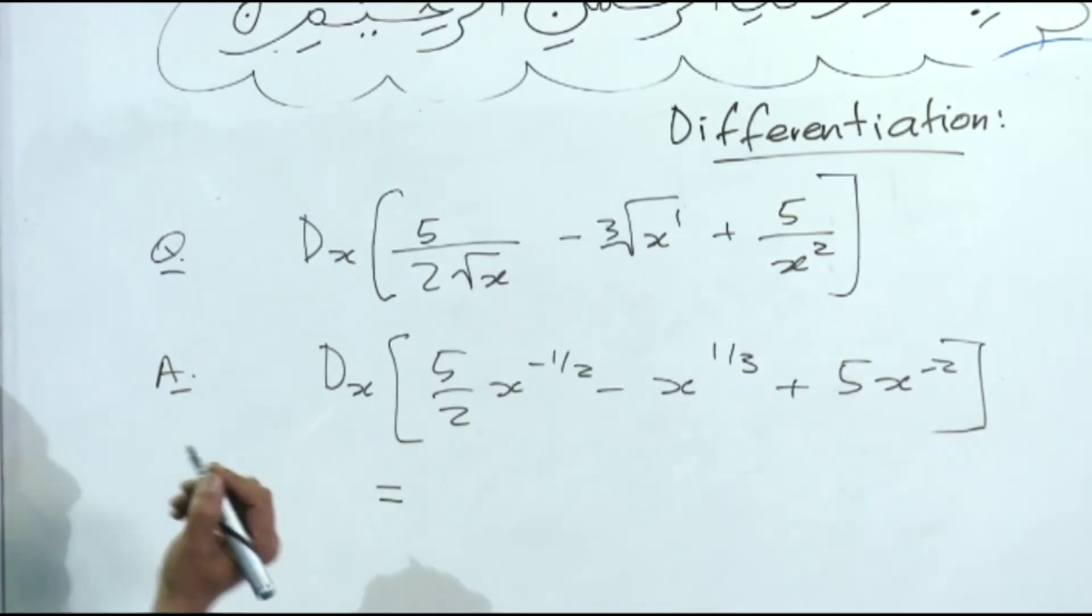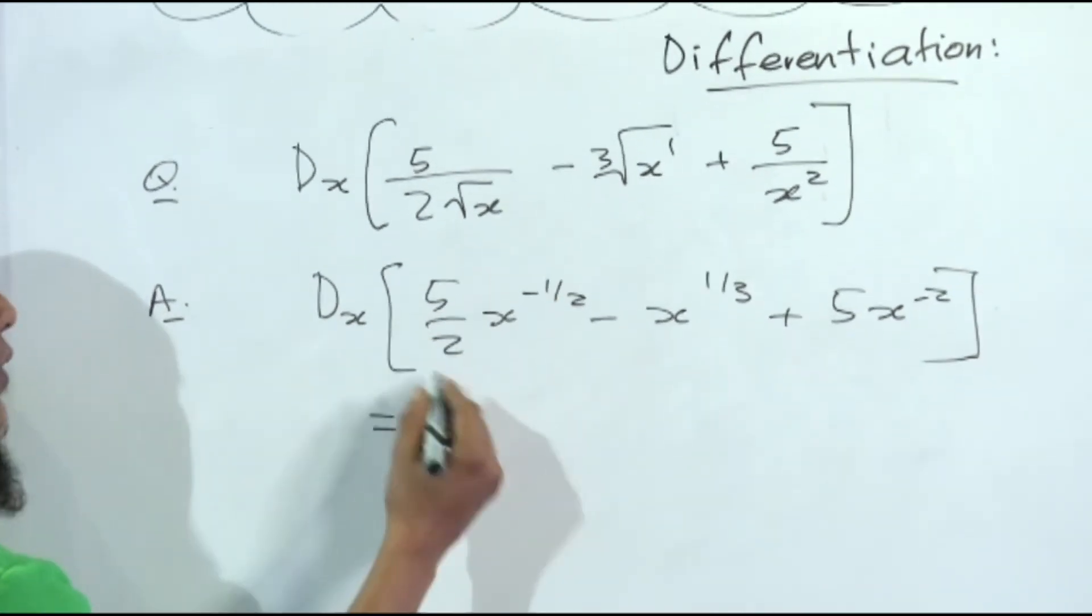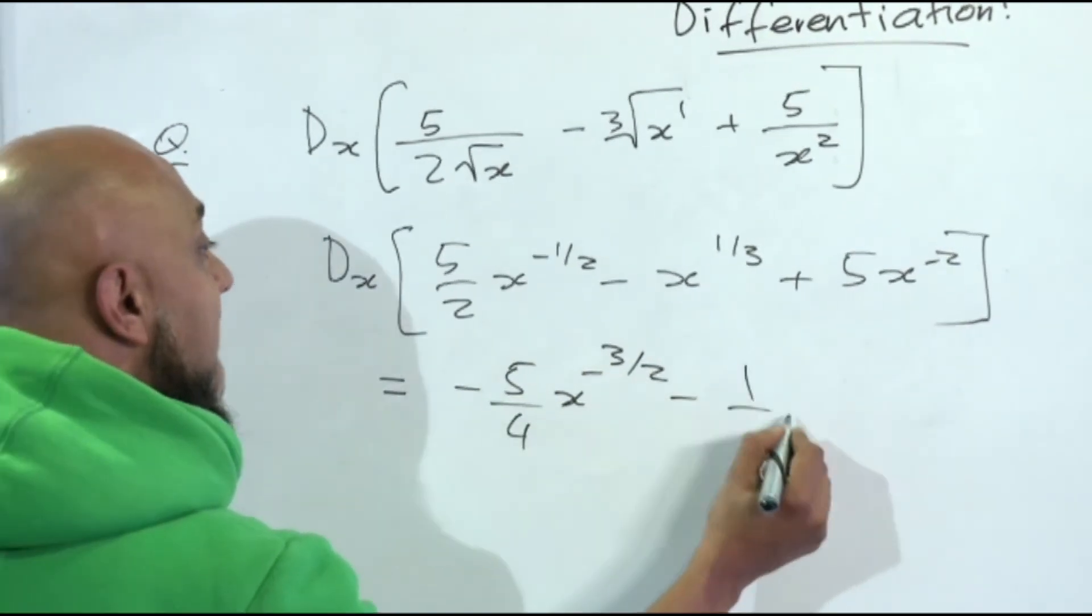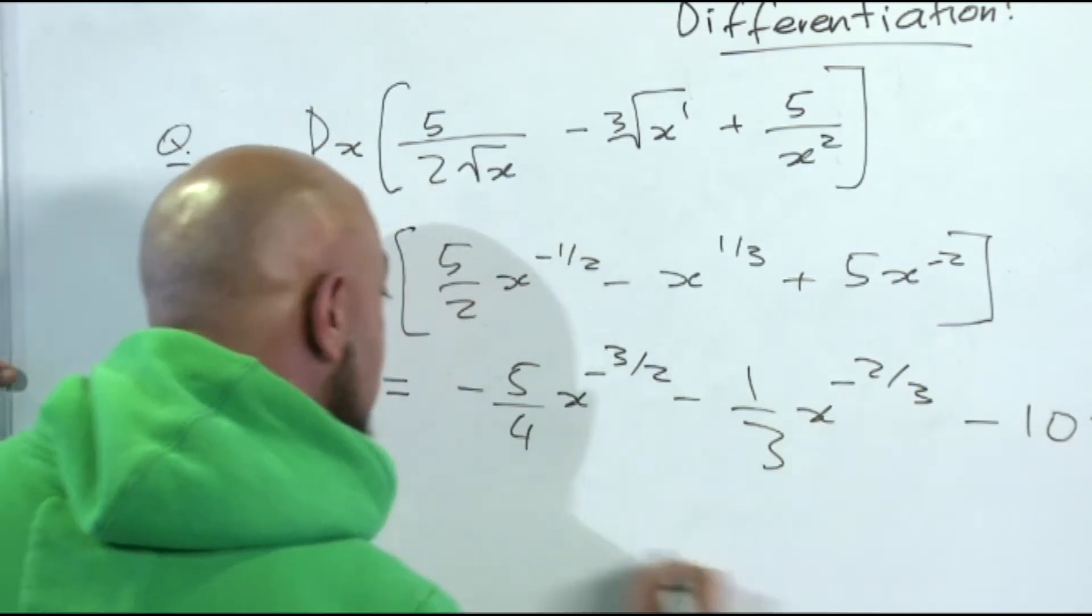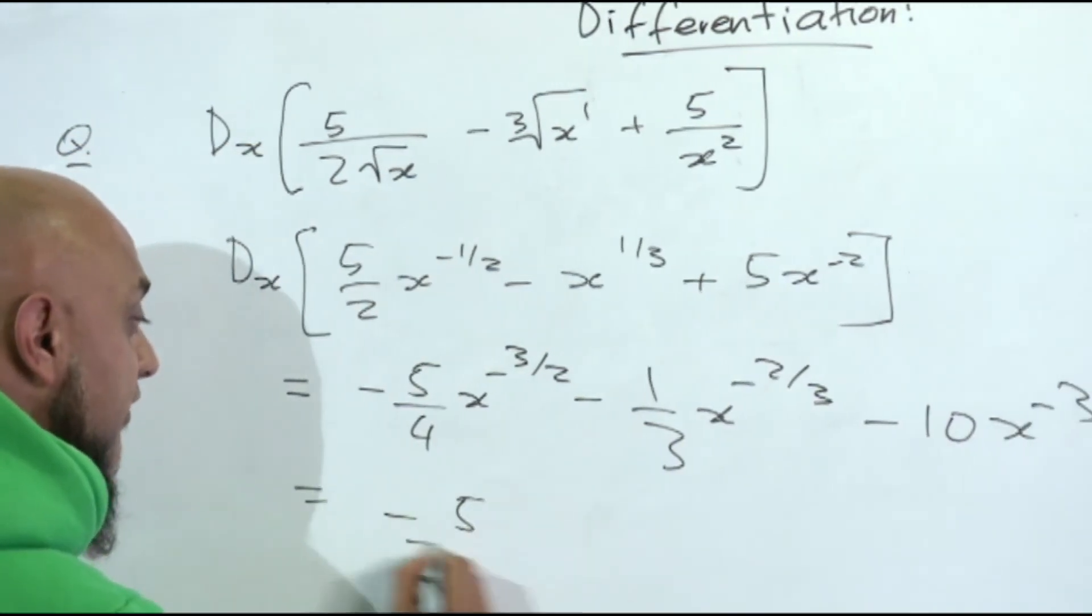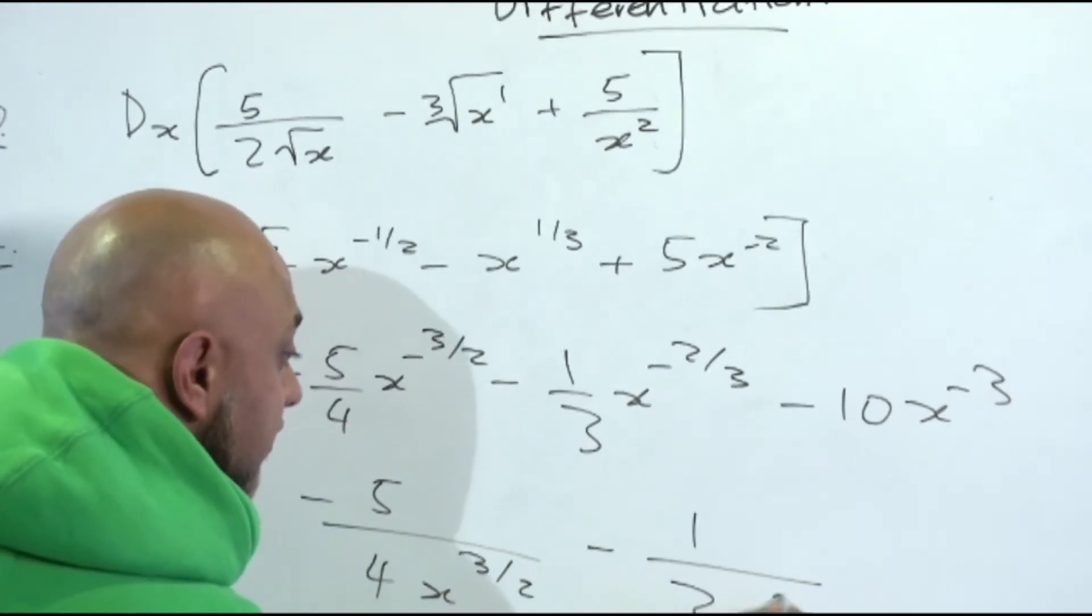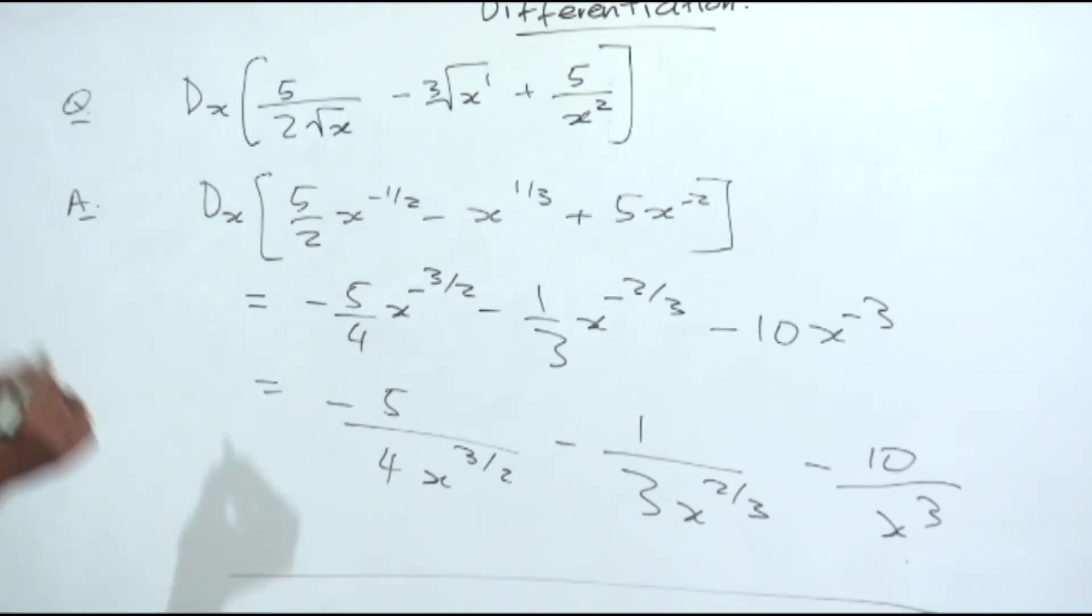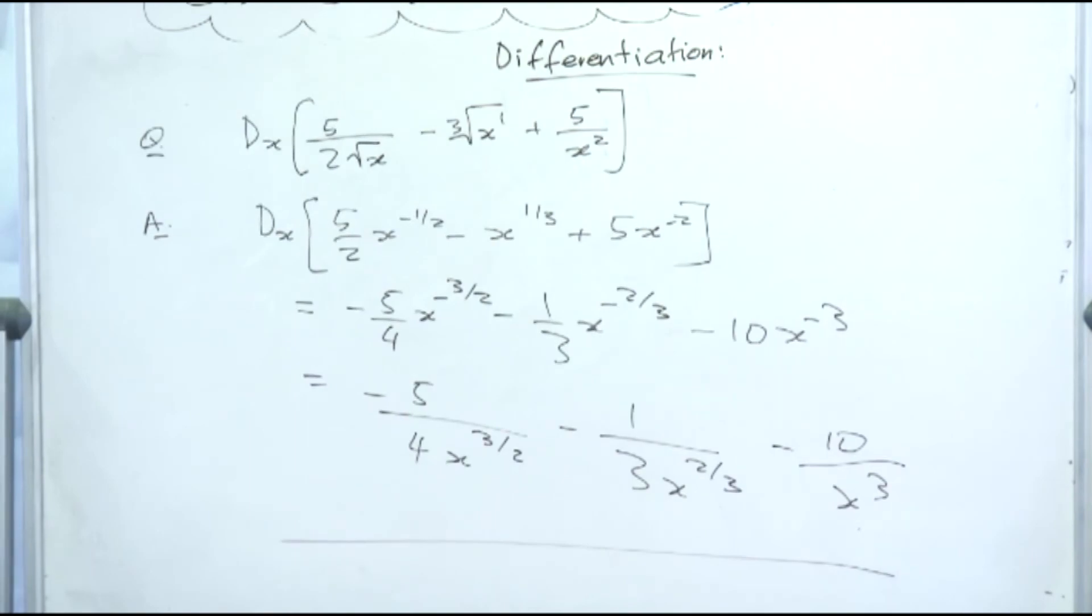The minute you put an equal to sign, it already indicates to the person who's marking you're finding the derivative. You've got to put it in this format. Now you will get minus 5 over 4 x to the power minus 3 over 2, minus a third x to the power minus 2 over 3, minus 10 x to the power minus 3, which is equal to minus 5 over 4 x to the power 3 over 2, minus 1 over 3 x to the power 2 over 3, minus 10 over x cubed. And that's the format in which it will be granted.